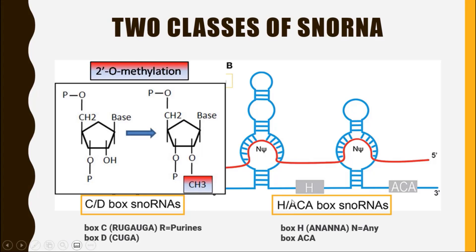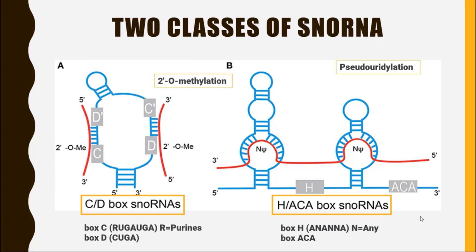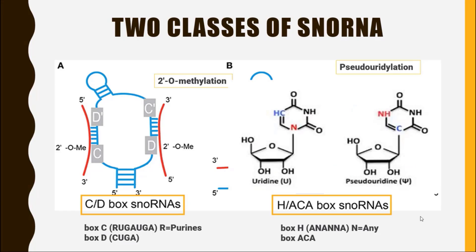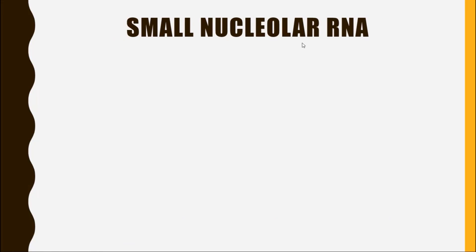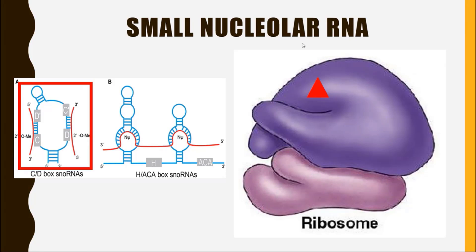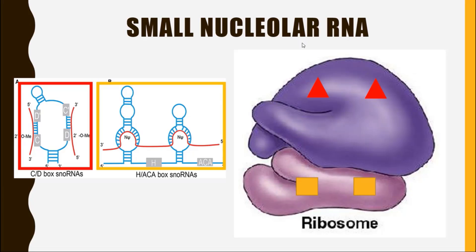On the other hand, the H/ACA box snoRNA performs post-transcriptional modification on ribosomal RNA called pseudo-uridylation. This means it attaches a pseudouridine nucleotide instead of a normal uracil inside the ribosomal RNA. These modifications are necessary for ribosomal maturation, and when the ribosomes become mature, they can perform their function.